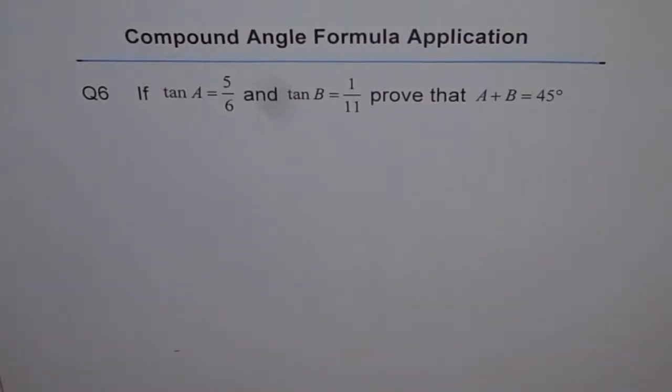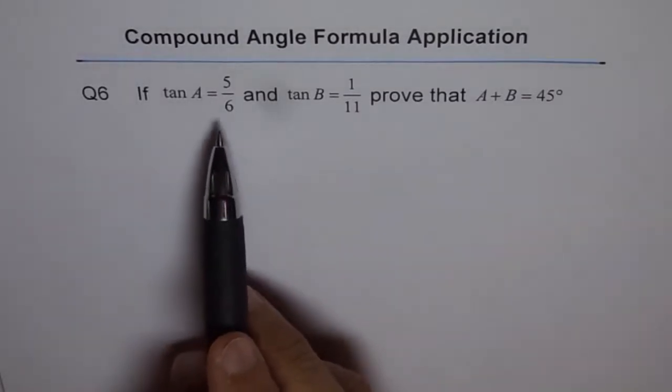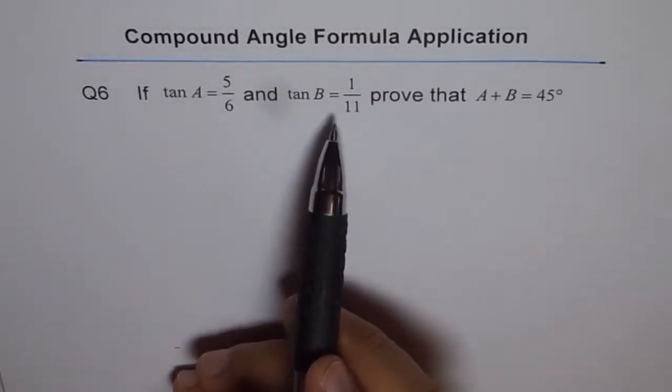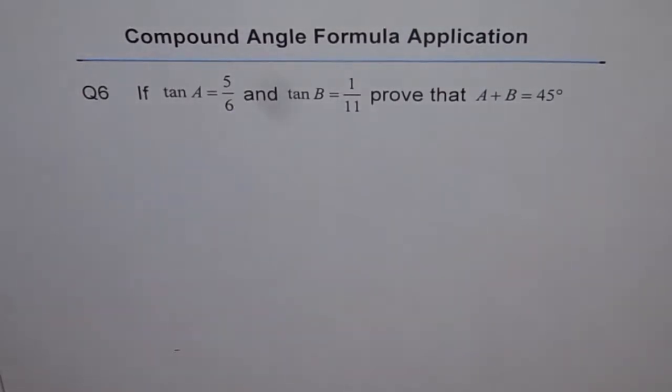Compound angle formula application. Question 6. If tan A equals 5 over 6 and tan B equals 1 over 11, prove that A plus B is 45 degrees.